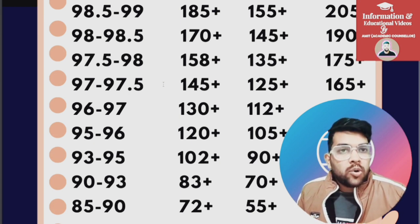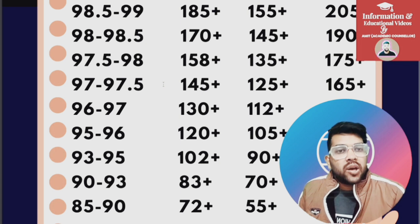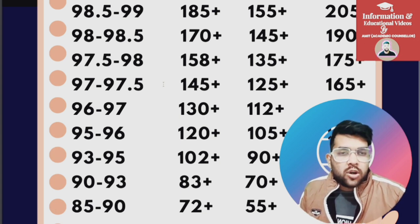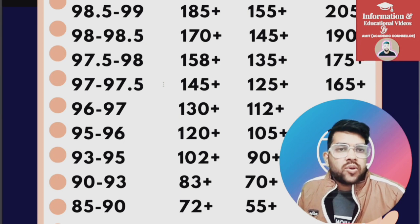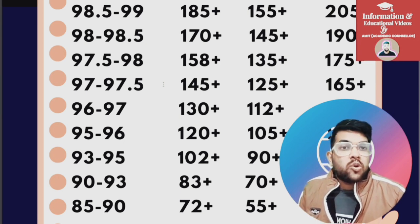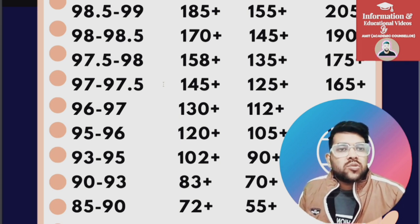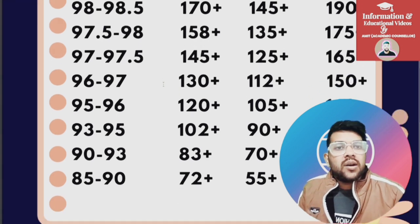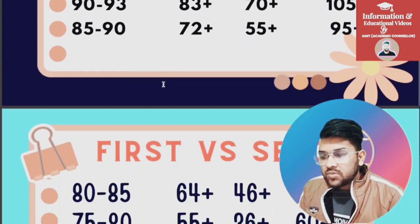In the first attempt of JEE, most of the papers were easy to moderate, which is why you may have had to score a little bit higher marks. There were one or two shifts where the paper was moderate to difficult, but most papers were easy. Even if the paper is easy, you can still get a better percentile because most students haven't covered their syllabus properly, as the exam was held early this year.